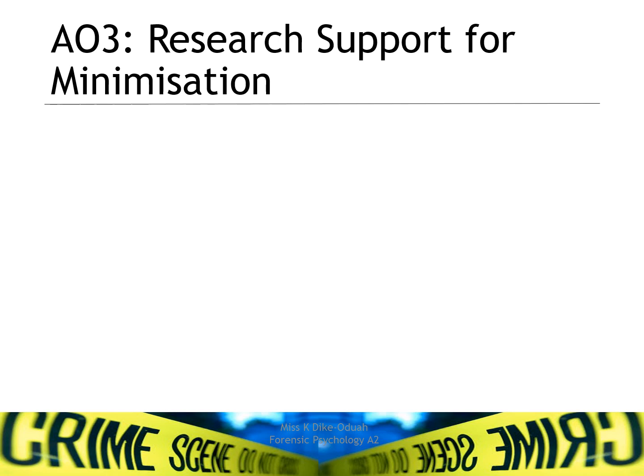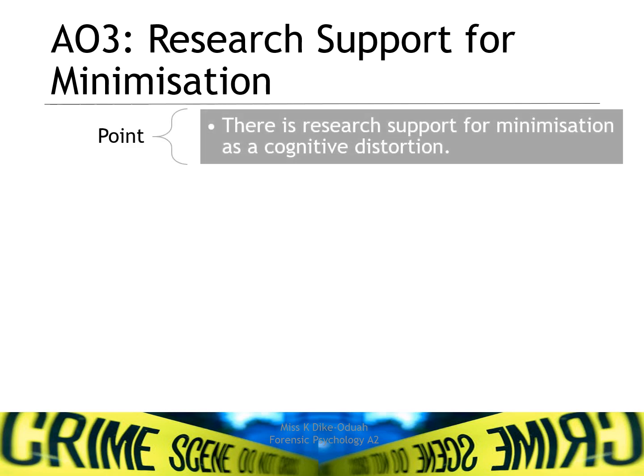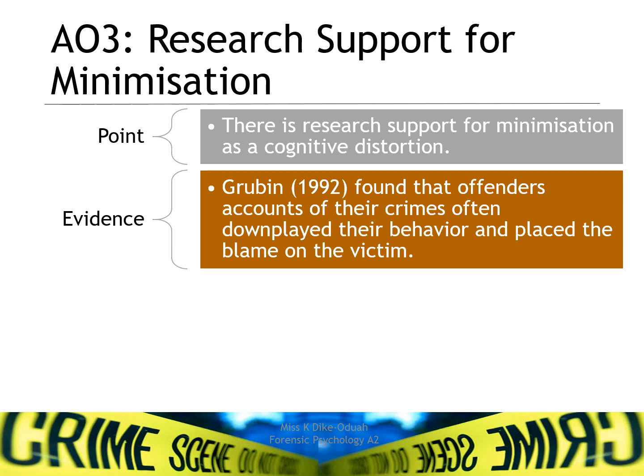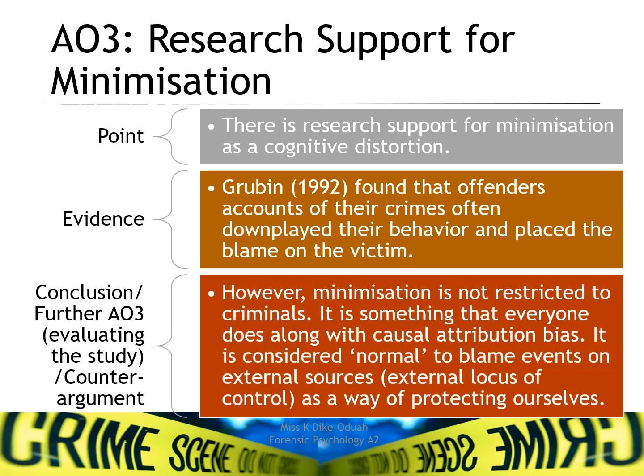There is also research support for minimisation as a cognitive distortion. The evidence comes from Grubbin, who found that offenders' accounts of their crime often downplayed their behaviour and placed the blame on the victim. However, minimisation is not restricted to criminals — it is something that everyone does, along with causal attribution bias. It is considered normal to blame events on external sources as a way of protecting ourselves. Nobody wants to be caught out, and everybody when they do something wrong tends to minimise or downplay it.